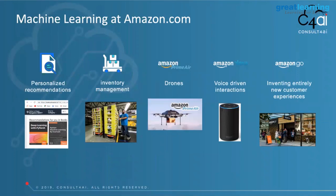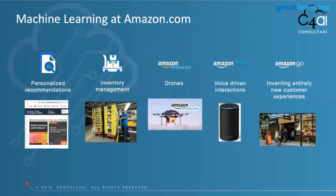Machine learning at Amazon.com - where does the retail giant use their machine learning capability? Some capabilities used in their AWS environment: first, personalized recommendations. When you buy a book on deep learning, you immediately see recommendations like 'Python Deep Learning' suggested to you. That's the first place they use machine learning on Amazon.com.